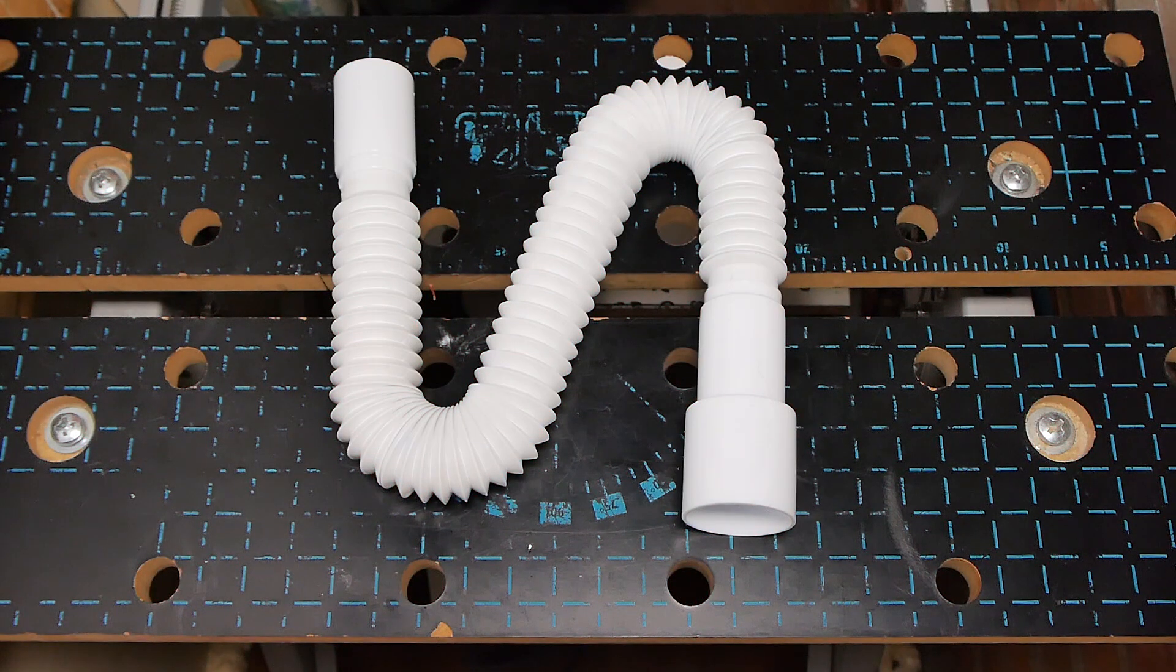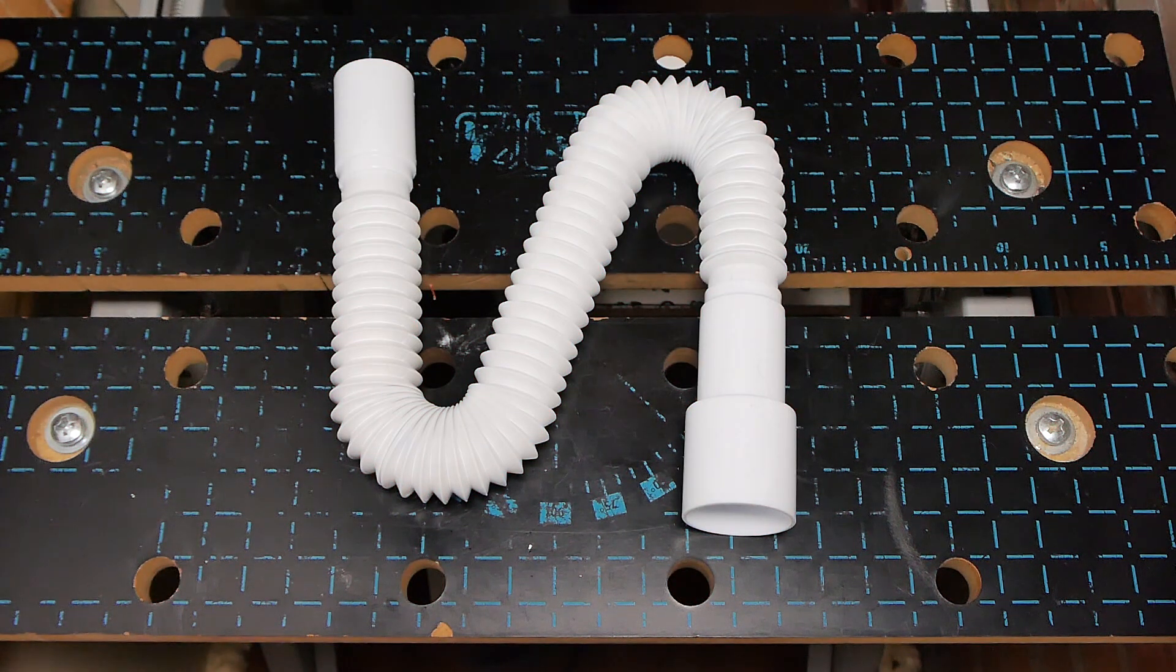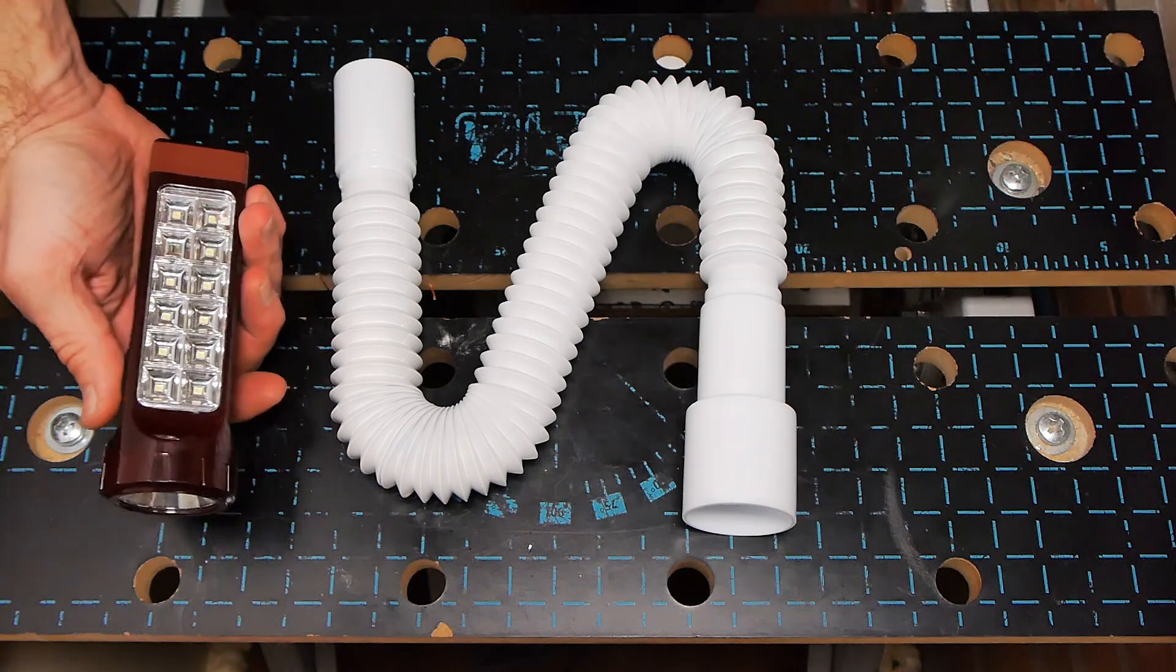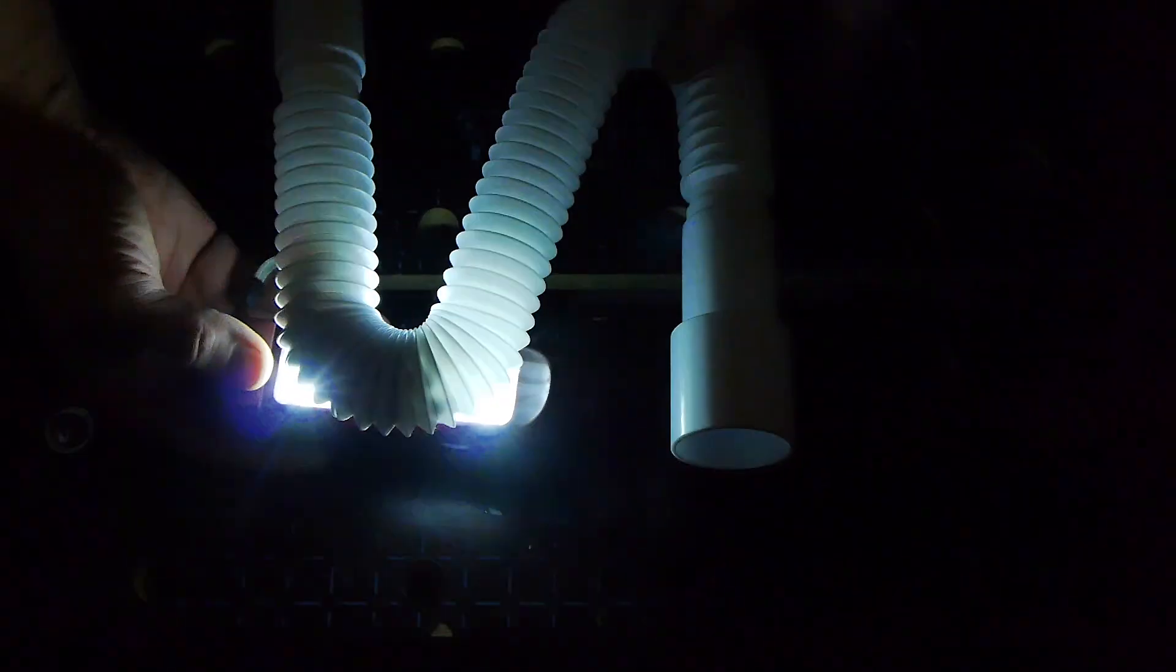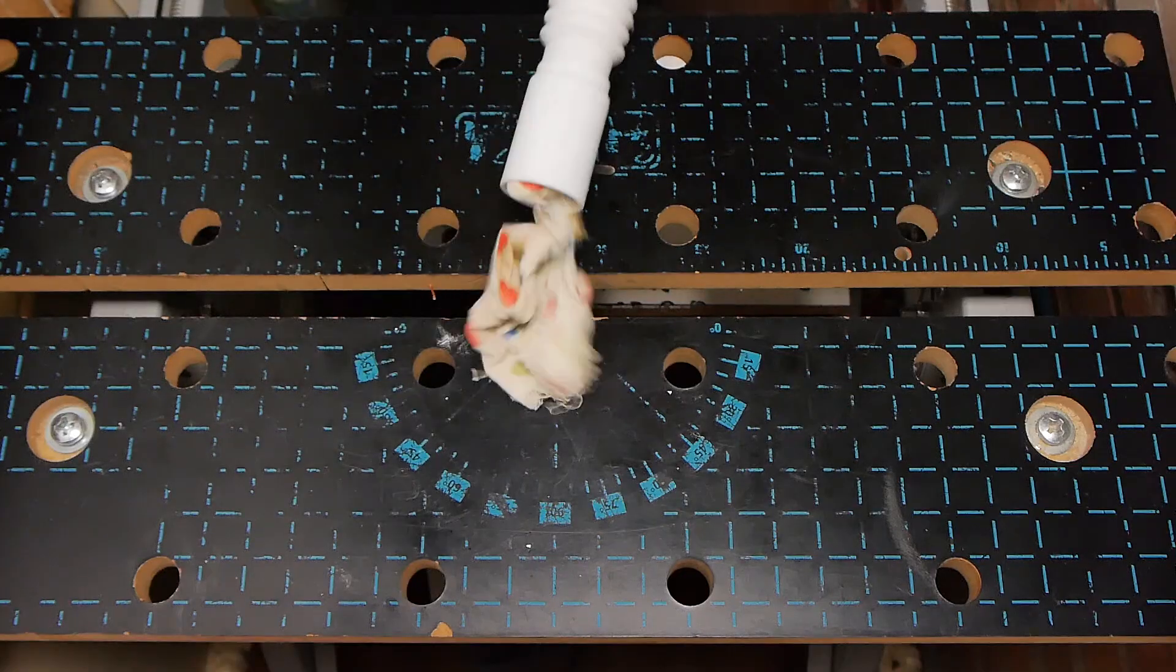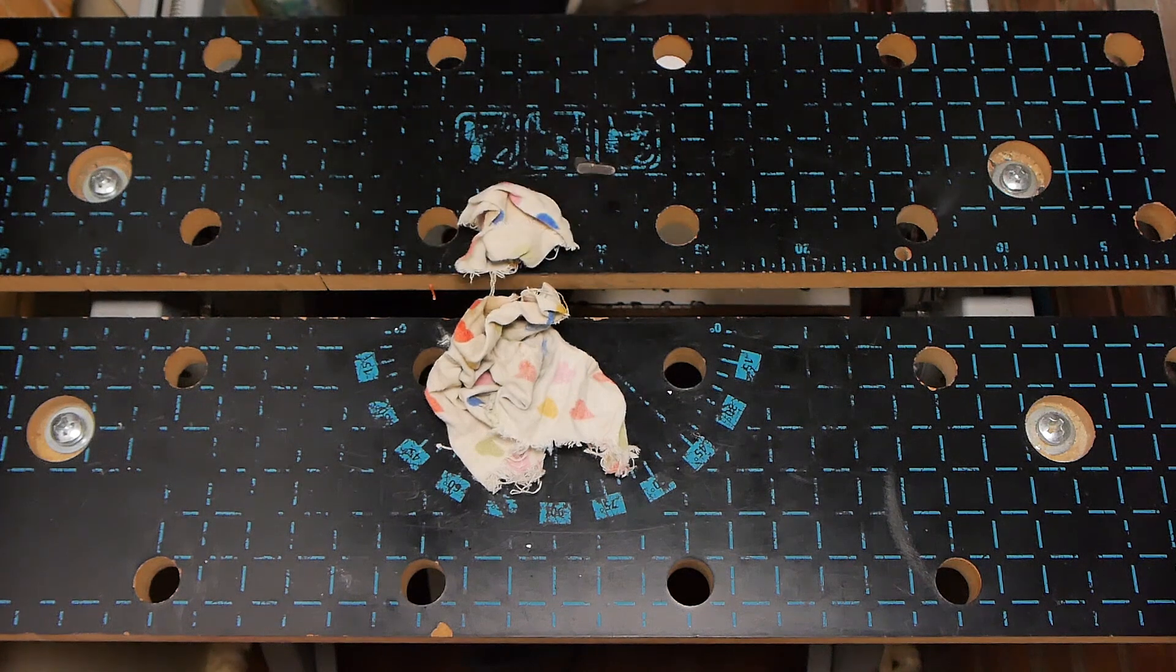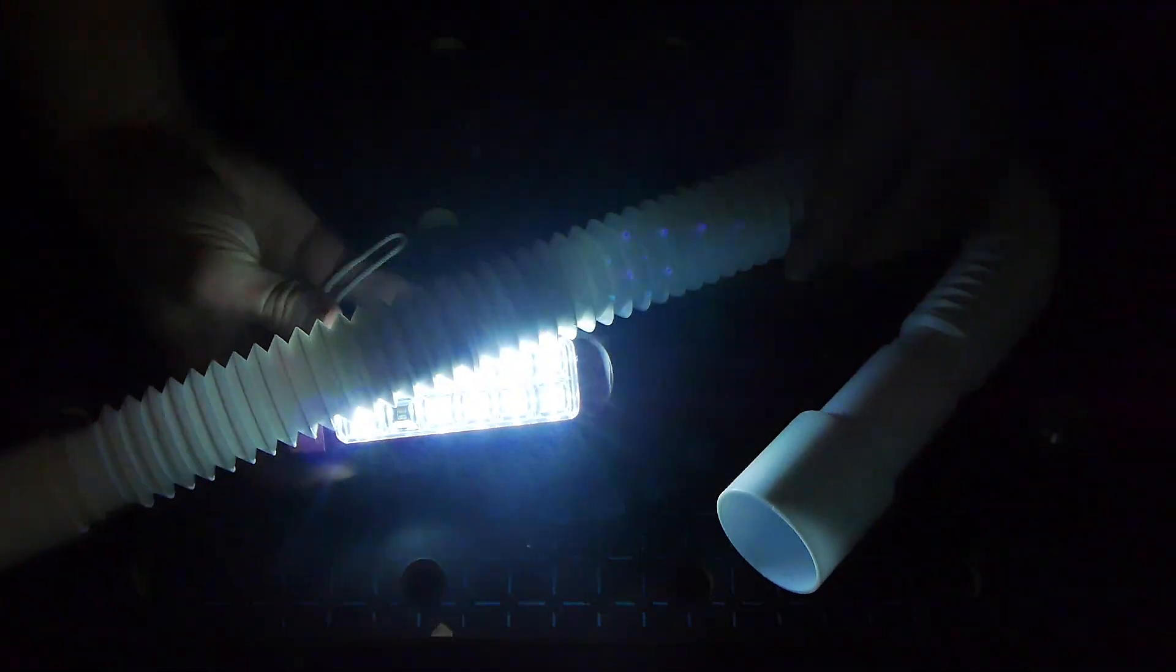In order to quickly detect a blockage in a corrugated sewer pipe, or to revise it, it is enough to light the pipe through with a flashlight and see where the blockage is located, or a rag in my case. A really great hack that can come in handy.